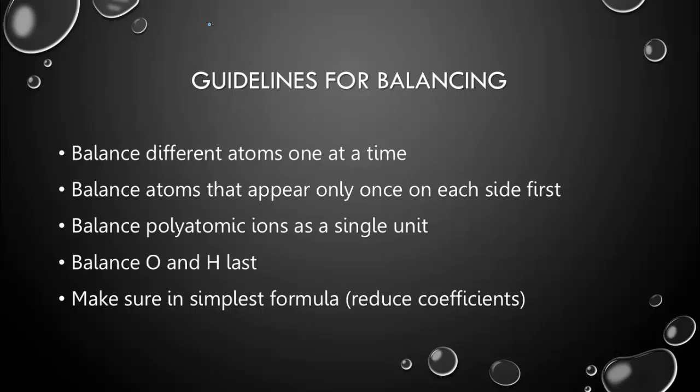And finally, you want to balance O and H last. These are some of the most common elements you'll see, and they're in a bunch of different compounds. We usually balance O and H last because often they will end up balancing out themselves. And then once you have everything balanced, always make sure it's in simplest form. Reduce your coefficients if you can. As you're moving back and forth, you may end up getting some larger numbers. If you look at it, they may all be divisible by 2. If they are, then you're just going to reduce them all.